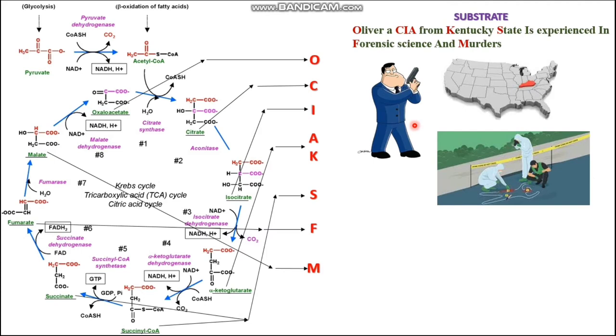Now let us discuss how to easily memorize and understand the enzyme names of Krebs cycle process. If you see, except few enzyme names in this Krebs cycle process, other enzyme names can be easily understood and memorized with the help of some keywords. So let me explain how it can be done.